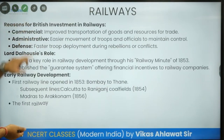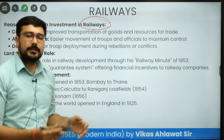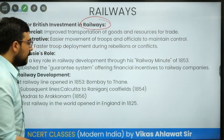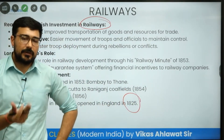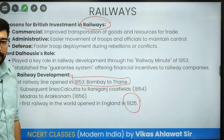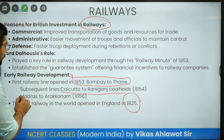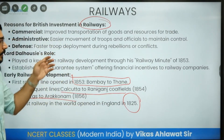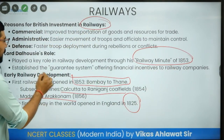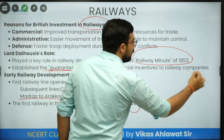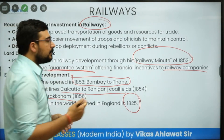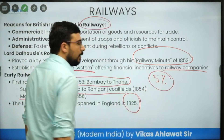One of the most important achievements was the introduction of railways. He had already been instrumental in expanding railways in England. England's railway started around 1825 — roughly three decades before India. In India, the first railway ran from Bombay to Thane in 1853, then Calcutta to Raniganj in 1854, and Madras to Arakonam in 1856. The Railway Minute of 1853 came out with a guarantee system offering financial incentives to railway companies.